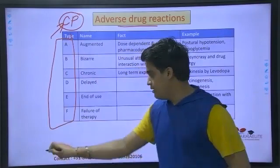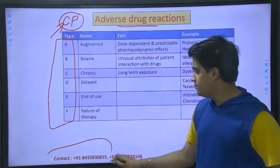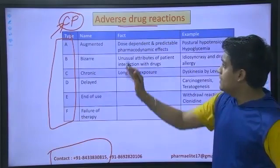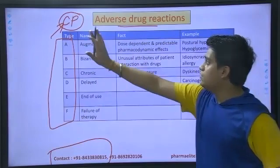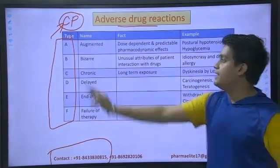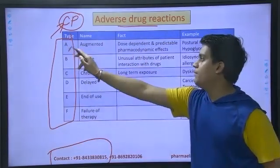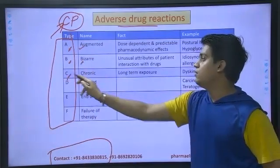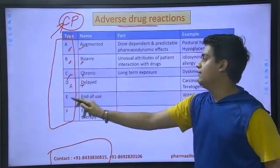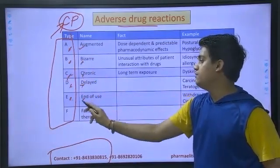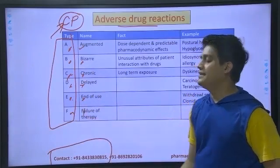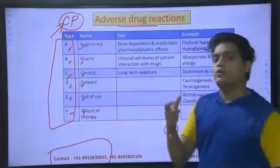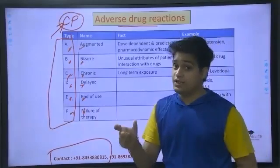There are two ways of ADR classification; we are taking only one here. So basically, the ADR classification is: A for Augmented, B for Bizarre, C for Chronic, D for Delayed, E for End of use, F for Failure of therapy. Let's understand what each term is trying to say.